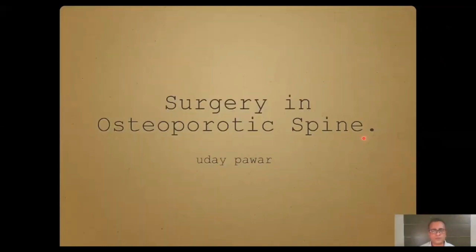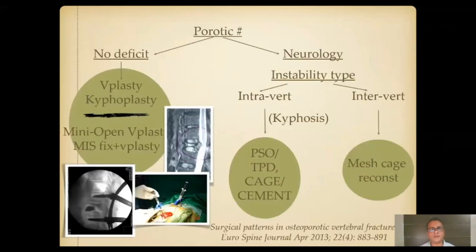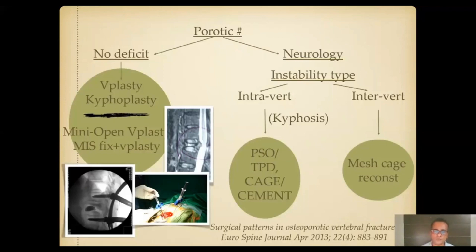Good afternoon. Today we are going to discuss the surgical options and surgical principles in the osteoporotic spine. The osteoporotic spine can present with instability, a neurological deficit, or significant associated kyphosis. In 2013, we did a study published in the European Spine Journal discussing surgical options in osteoporotic fractures — in cases without neurological deficit and in cases with a significant neurological deficit. The options range from a plain vertebroplasty or kyphoplasty to a moderately challenging minimally invasive fixation, to significant column reconstruction surgeries involving osteotomy or mesh reconstruction of the anterior column from a posterior approach.